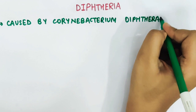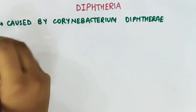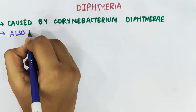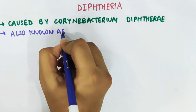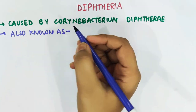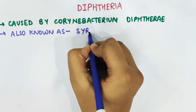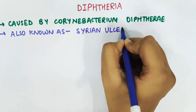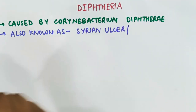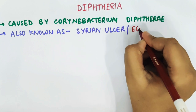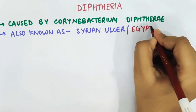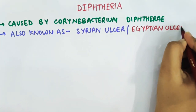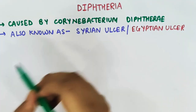Historically, diphtheria was described as Egyptian or siren ulcer in the 2nd century. It is also known as the strangling angel of children because it was a leading cause of death in children due to respiratory obstruction.